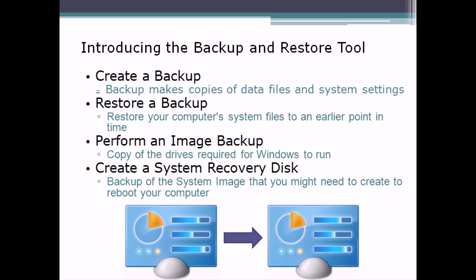Your backup and restore tools are really straightforward. You can use the Windows Backup tool to make a backup, which is a copy of your data files. And if there's ever an issue — you lost a file — you can simply restore that data file, or even your system file, back to the machine.